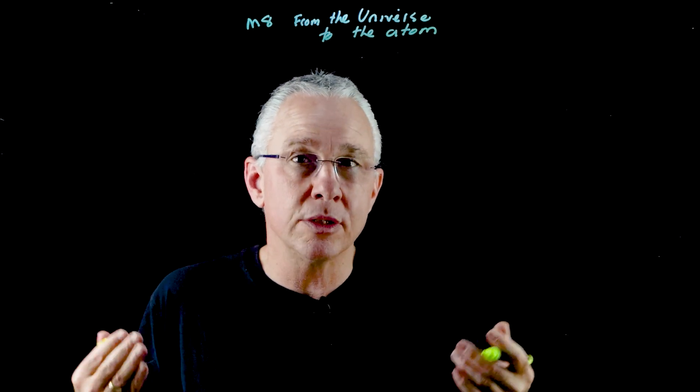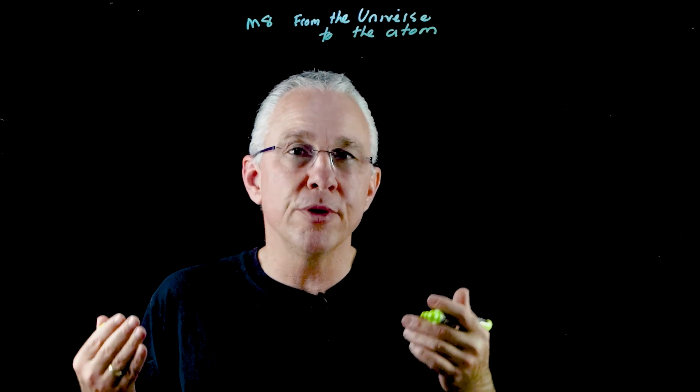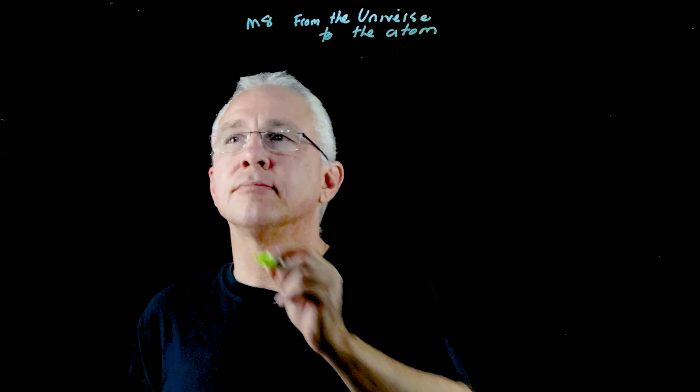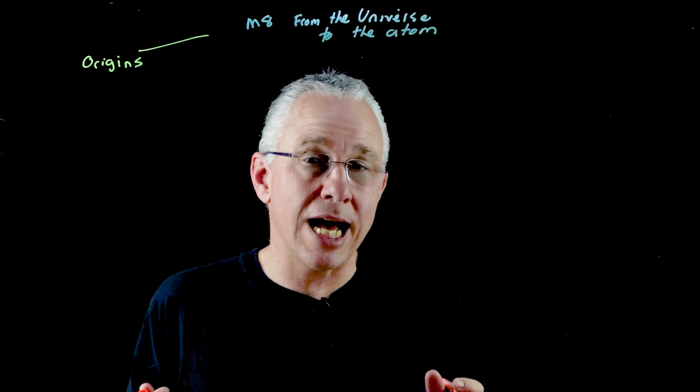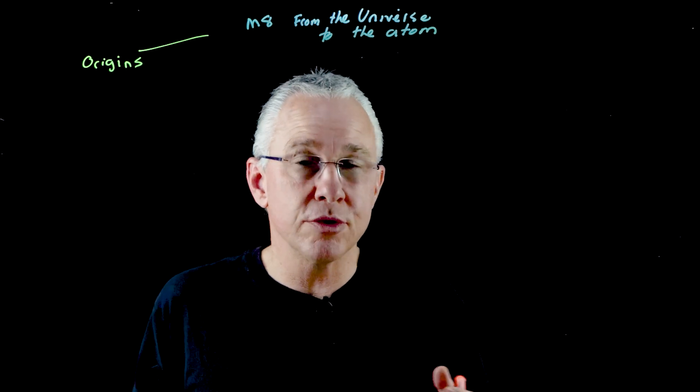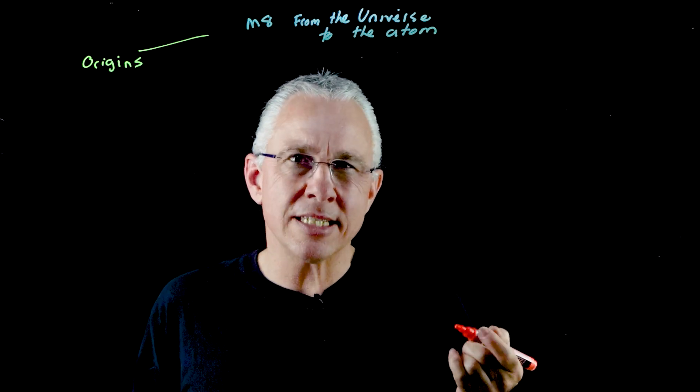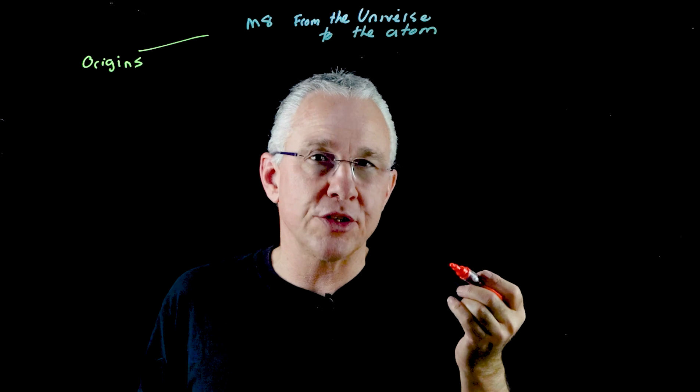So the first inquiry question asks, what evidence is there for the origin of the elements? The second inquiry question asks, how is it known that the atom is made up of protons, neutrons, and electrons? In essence, we're dealing with the atomic structure.